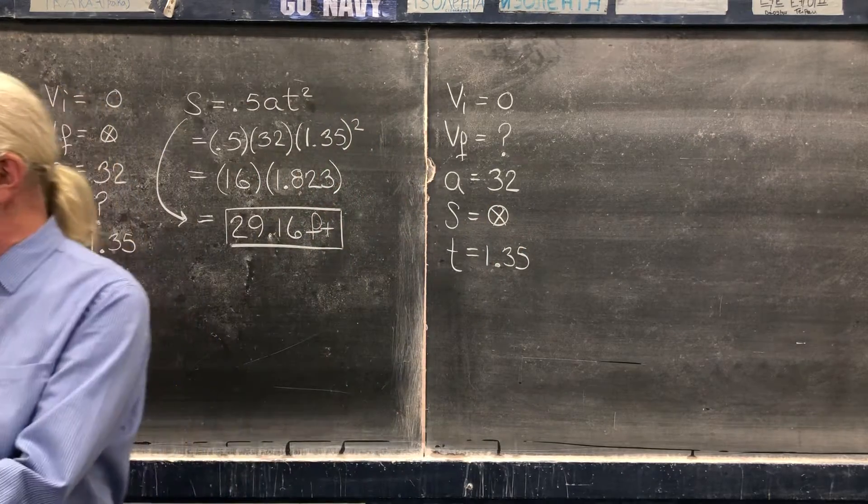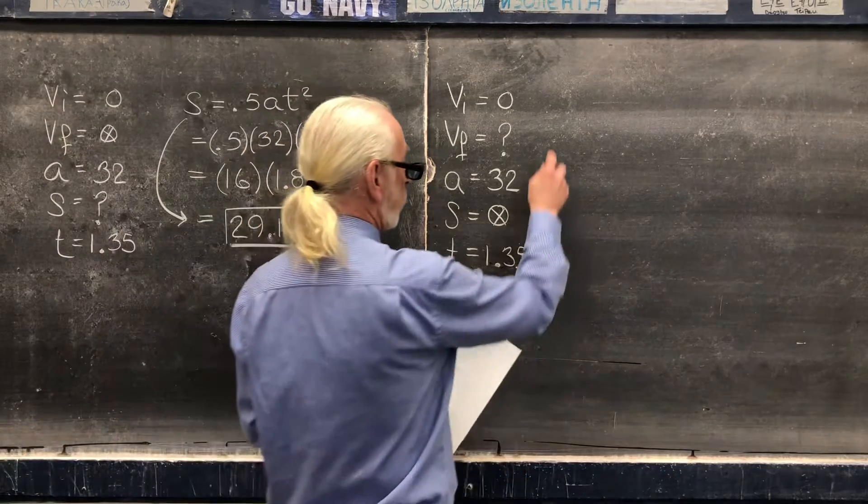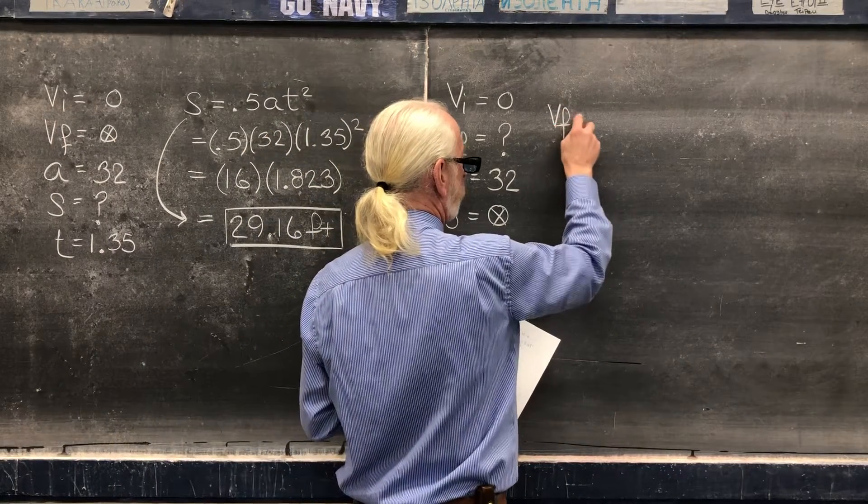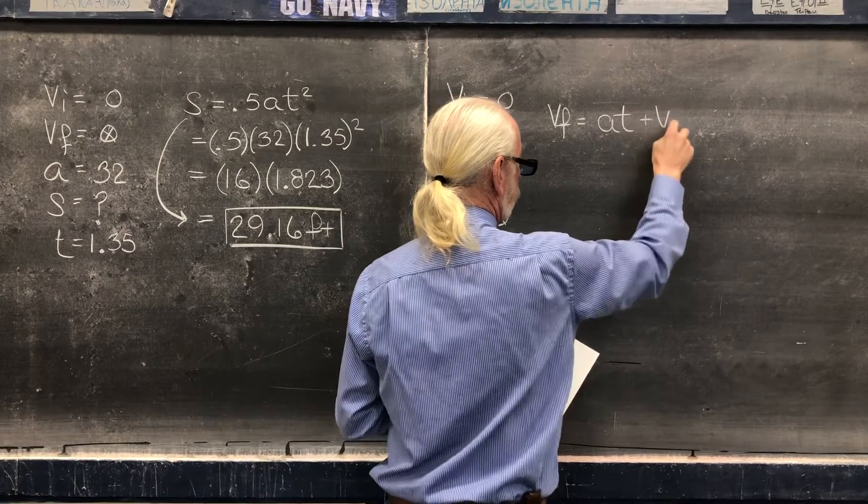Looking at your cheat sheet, the magic formula goes like so: vf equals at plus vi.